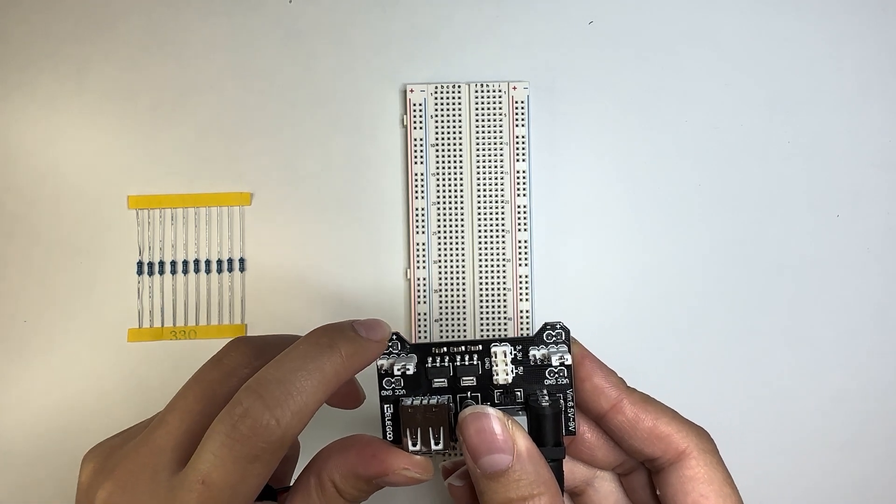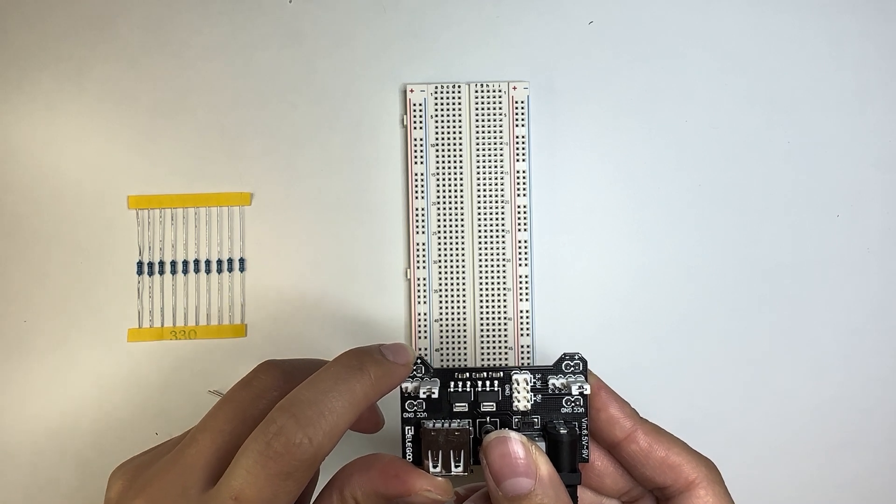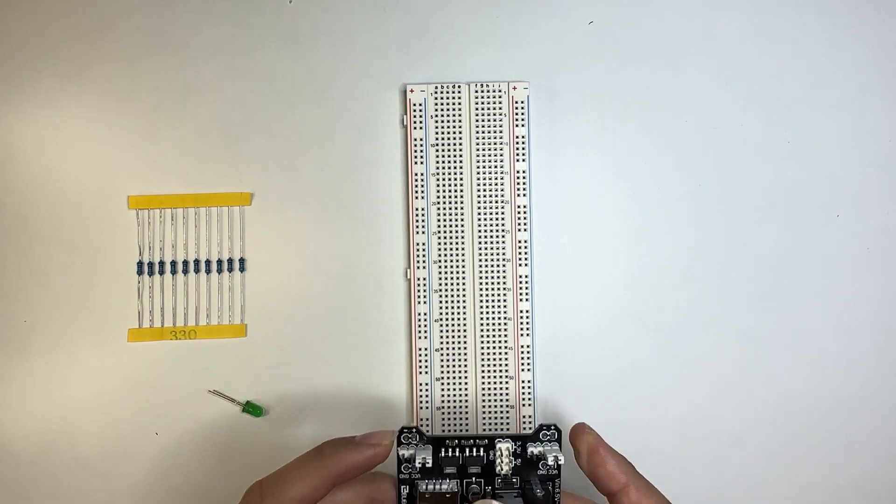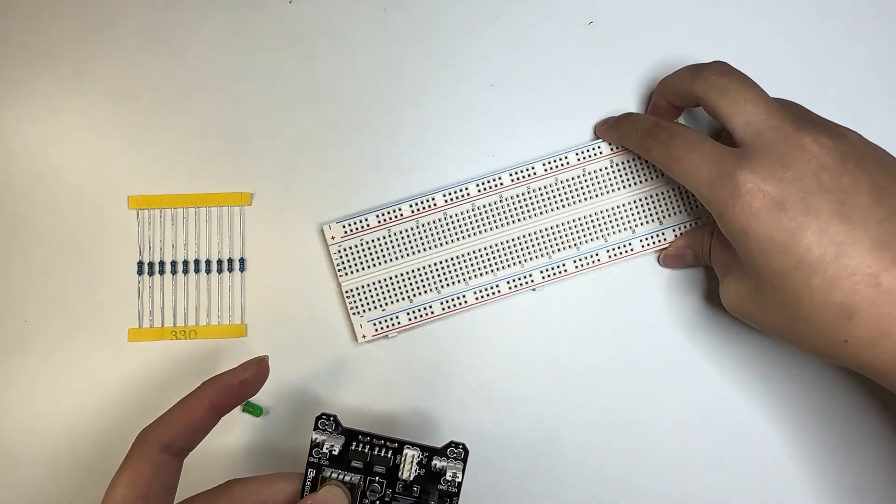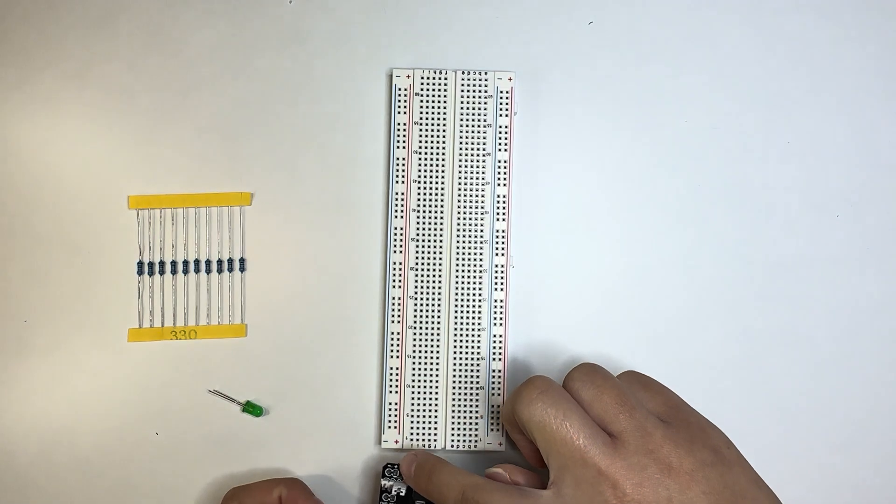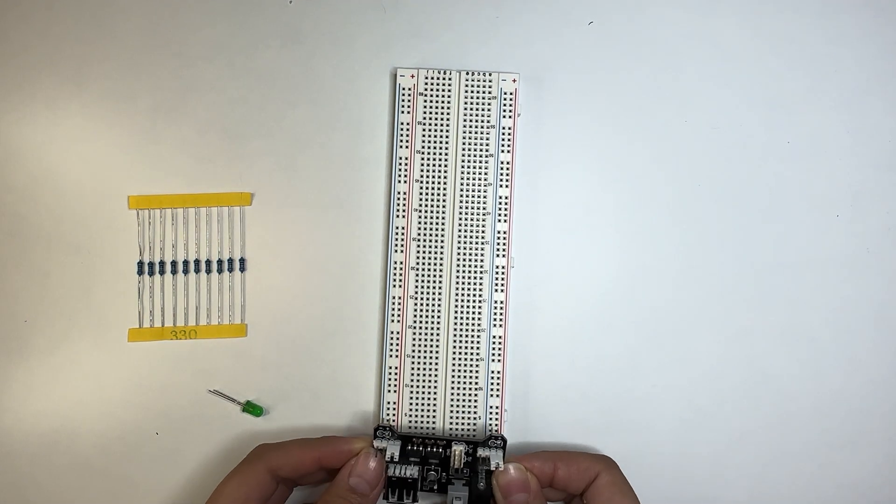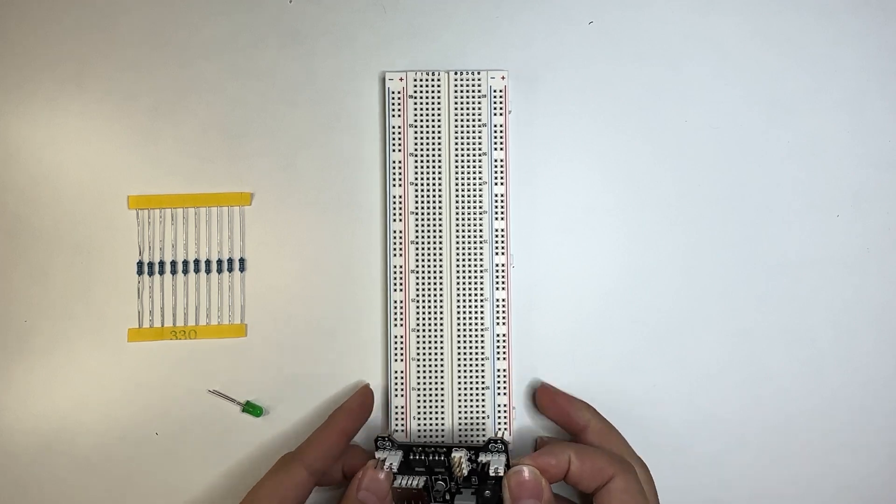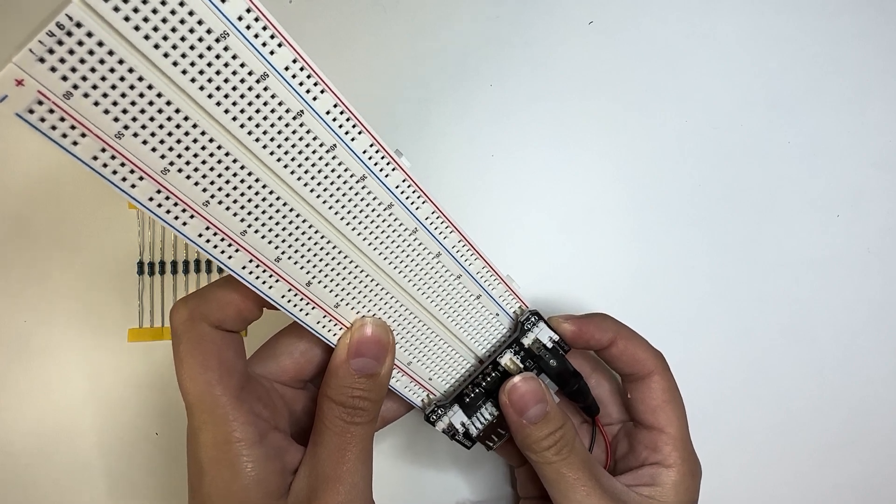Because we have a positive, always, always remember that the standard for positive is red. Okay? So you have red here. You're going to have to turn this around. That way the positive from here correlates to positive on the breadboard. And now that you have that, you want to stick the prong into the breadboard, okay?